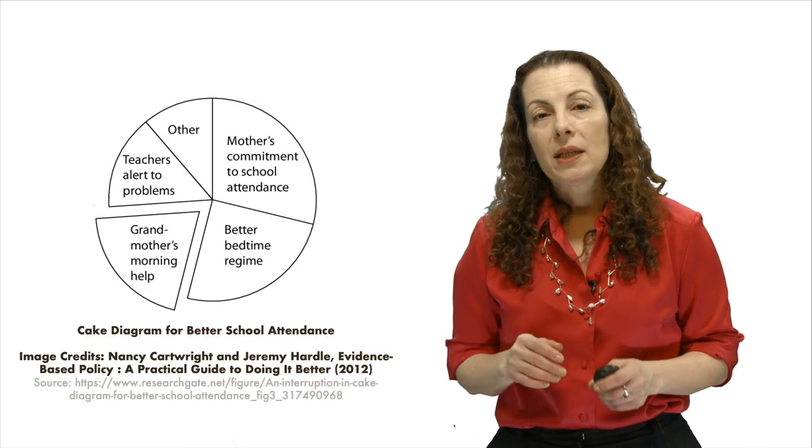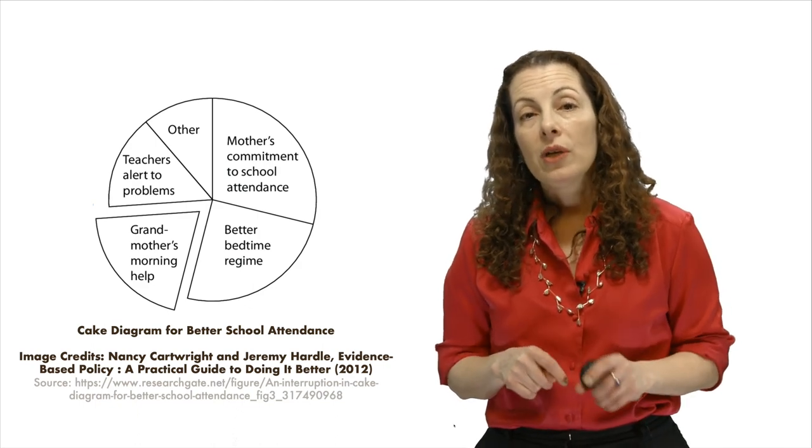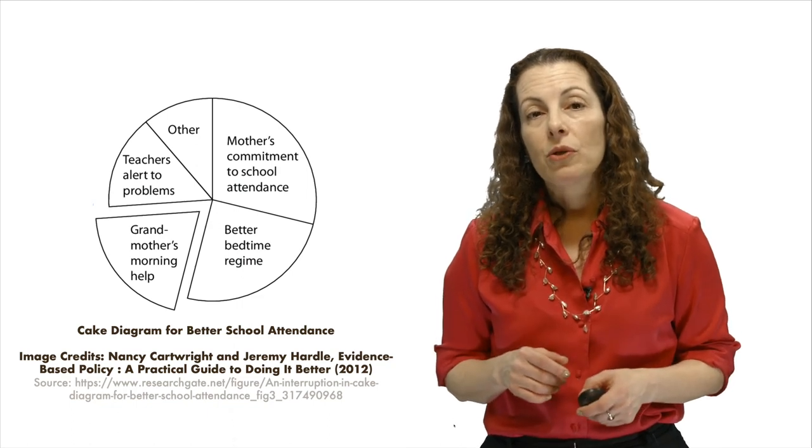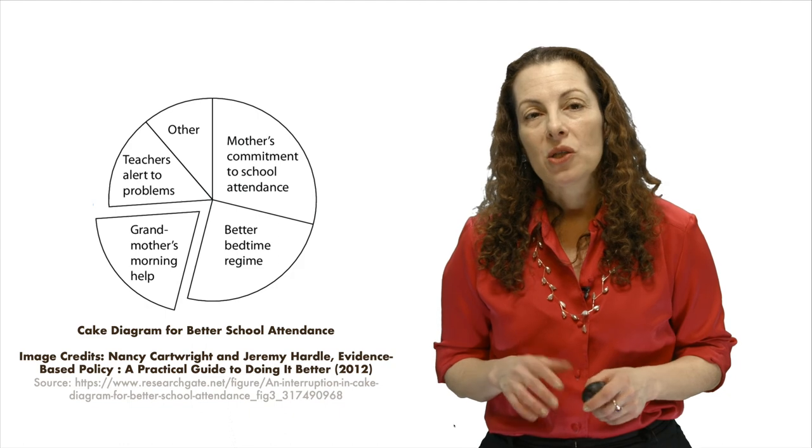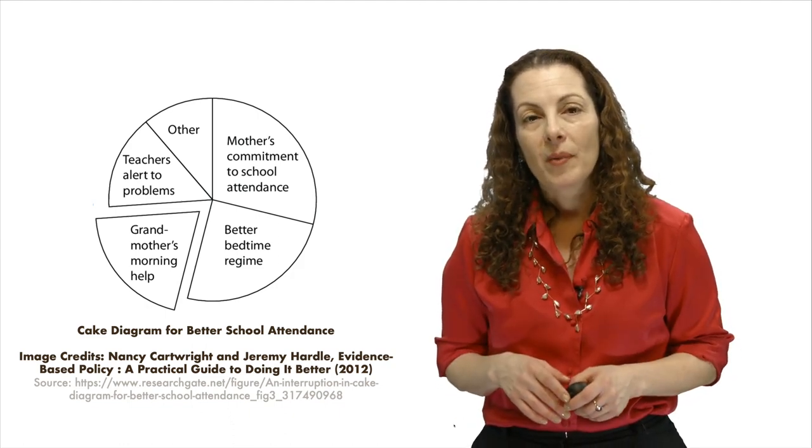To figure out what needs to be present for an intervention to work here, not just there, you need to understand the supporting factors that make it work there. Some scholars describe the solution as one ingredient in a cake that works with other ingredients to produce the desired effect. Without the supporting ingredients, the cake will not rise.